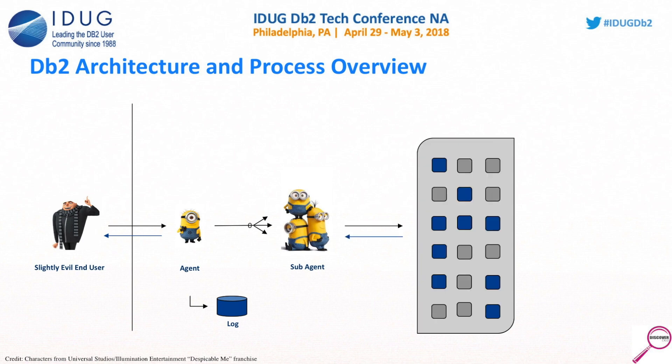When you are trying to retrieve data, the agents are always going to try to go to the buffer pool first. This is an area of memory in DB2 holding pages of actual data, index information, anything that DB2 can elevate off of disk into memory. This is a really important part of the ecosystem — this is where all your tuning is happening. A lot of tuning is around how to get memory to be more efficient and get more information off disk into memory, because the more that's in memory, the faster you can get to it.